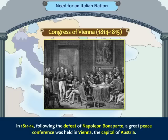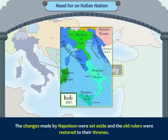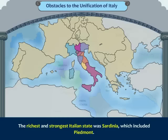In 1814–1815, following the defeat of Napoleon Bonaparte, a great peace conference was held in Vienna, the capital of Austria. The European statesmen at the Congress of Vienna decided to restore Europe to its former position — before the outbreak of the French Revolution and Napoleon's conquests. The changes made by Napoleon were set aside, the old rulers were restored to their thrones, and Italy was once again divided into numerous small states.